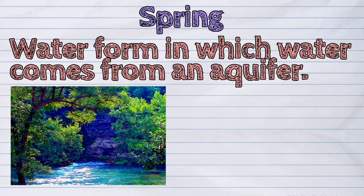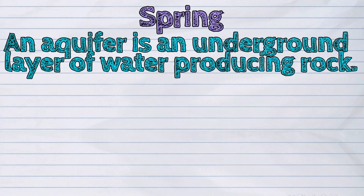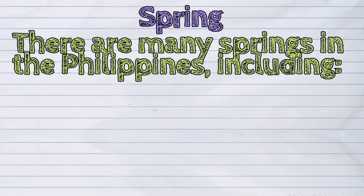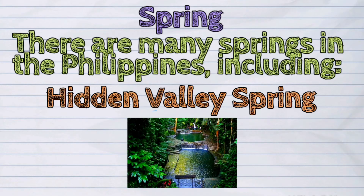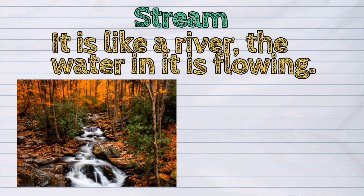A spring is another water form in which water comes from an aquifer. An aquifer is an underground layer of water-producing rock. There are many springs in the Philippines, including the Tangob Hot Spring in Camiguin and the Hidden Valley Spring in Laguna.